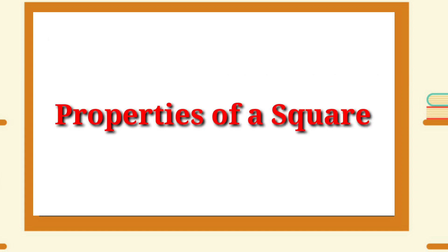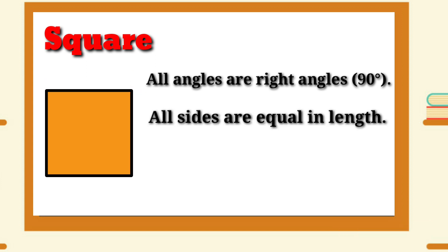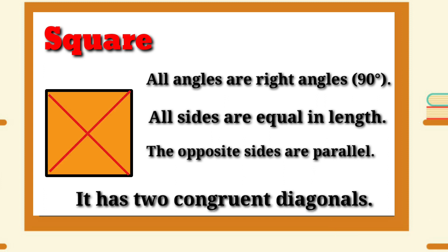Properties of a Square: All angles in a square are right angles. Each angle measures exactly 90 degrees. All sides are equal in length. The opposite sides are parallel, and it has two congruent diagonals.